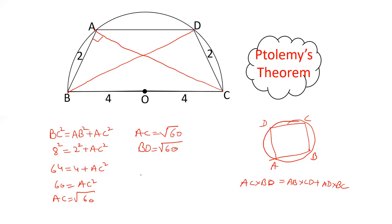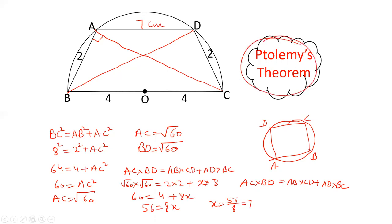This is the Ptolemy's theorem. The Ptolemy's theorem applies, which shows the two diagonal products equal sum of the products of the sides. AB into CD plus AD into BC. AC is √60, BD is √60. AB is 2, CD is 2. AD value times BC value 8. So 60 equals 4 plus 8x. 60 minus 4 is 56 equals 8x. x value is 56 by 8, equals 7 cm. So its value is 7 cm. This was our Ptolemy's theorem approach.